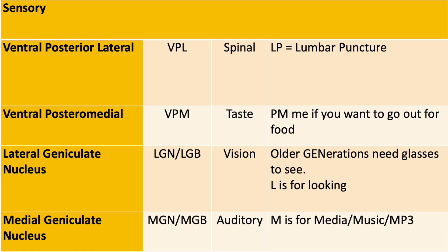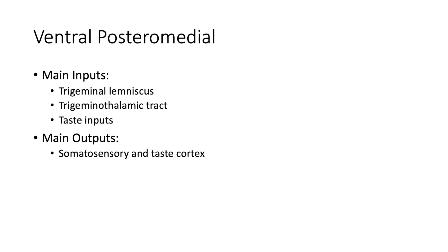The ventral posterior medial nucleus, or VPM, relays somatosensory cranial nerve inputs and taste to the cortex. PM in VPM makes me think of private messaging — picture someone PMing someone else to ask them out for food. Do you want to go eat? That reminds me that the VPM has to do with taste. The main inputs are the trigeminal lemniscus, the trigeminothalamic tract, and taste inputs, and the main outputs are the somatosensory and taste cortex.